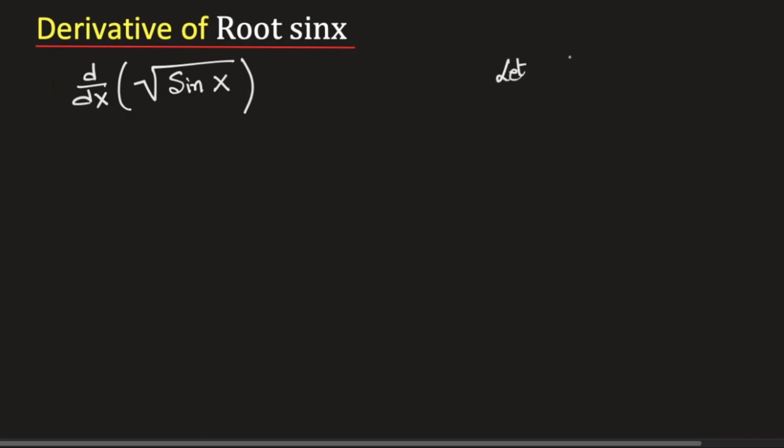So let us put t is equal to sin x. Now differentiating both sides with respect to x we get dt dx is equal to cosine x.